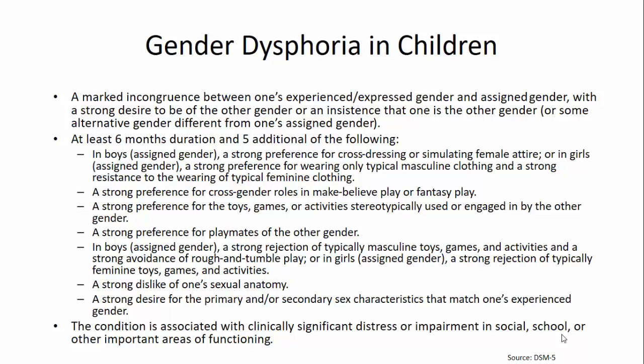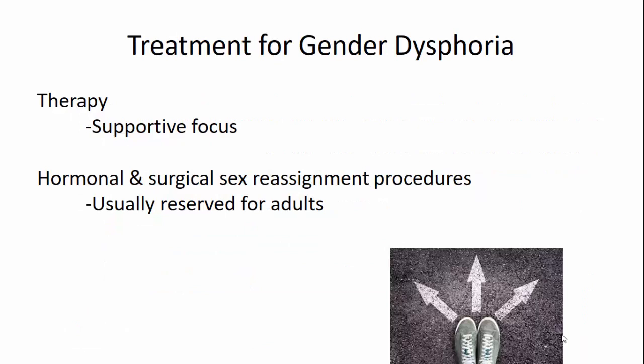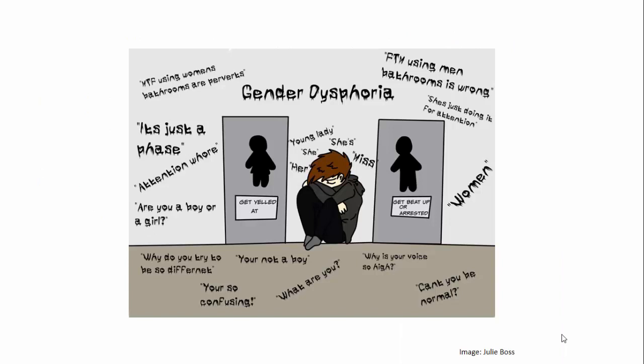Possible treatment options for gender dysphoria include supportive psychotherapy with a supportive focus. Hormonal and surgical sex reassignment procedures are typically reserved for adults and can be initiated even at the primary care level, followed by referral for surgical procedures. To build successful rapport, try to use the patient's preferred pronoun — for example, Mr., He, and His. We do need to record the biological sex and legal name, but we use their preferred name and pronouns when speaking to them. Note that these patients may have specific education needs regarding primary care; for example, a woman undergoing hormone therapy to transition to male will still need pap smears.